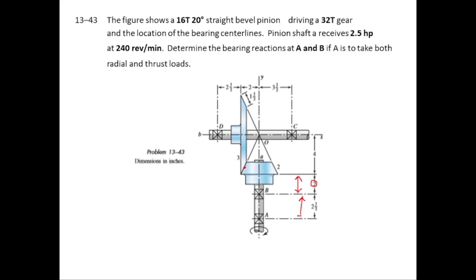The force exerted between the gears will be at a specific point. This distance is given as 2 inches and 2.5 inches, along the x and y axes. The 2 inches is the radius of the pinion gear. The distance from the y-axis to the point where the force is exerted is not given, so we will have to find it.